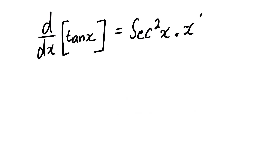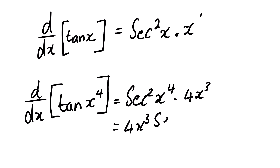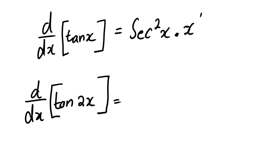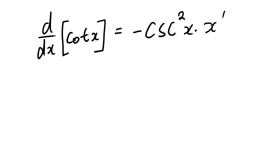The derivative of tan x equals secant squared x multiplied by the derivative of x. For example, the derivative of tan(x⁴) is secant squared(x⁴) multiplied by the derivative of x⁴, which is 4x³, giving 4x³ sec²(x⁴). The derivative of tan(2x) is sec²(2x) multiplied by 2, giving 2 sec²(2x).